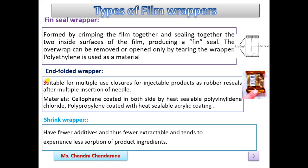The three types of film wrappers are: the fin seal wrapper, the end folded wrapper, and the shrink wrapper. For the fin seal wrapper, seals are formed by crimping the two sides of the film together and sealing them — producing the fin seal. The overwrap can be removed or opened only by tearing the wrapper. The material used to prepare the fin seal wrapper is polyethylene.